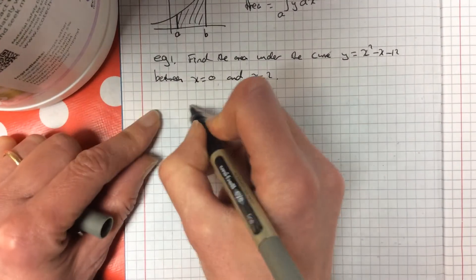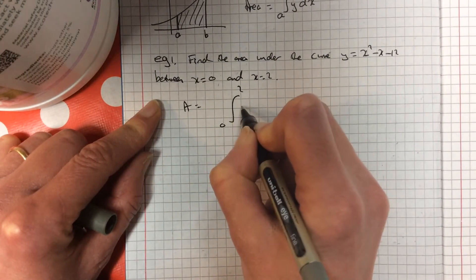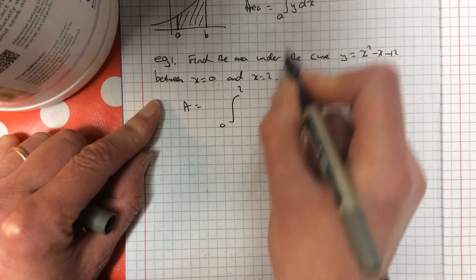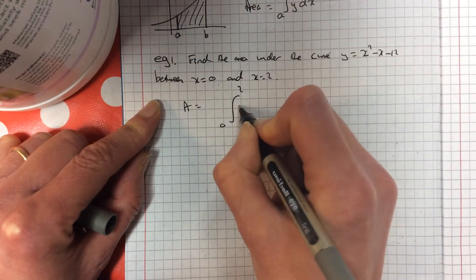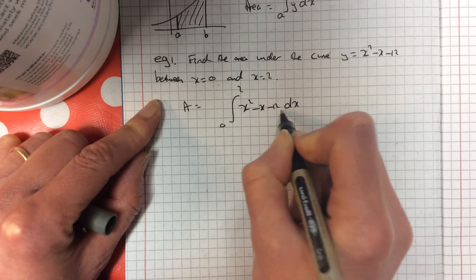Okay, so all you do for that one, integrate between 0 and 2. You put your curve in here. That's your y. This is your y here. So we'll pop it in. I put dx. You're going to integrate this.